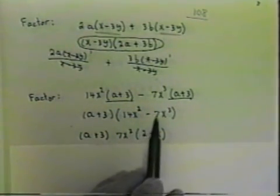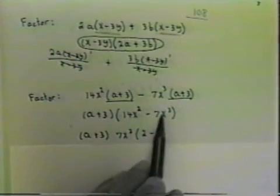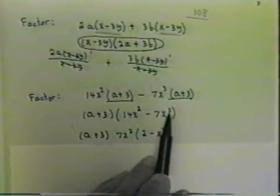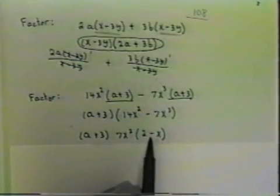If I divide 7x squared into 7x cubed, I get x. 7 goes into 7, 1. To divide powers having the same base, keep the base and subtract the exponents. 3 minus 2 is exponent 1. 1 times x is x.